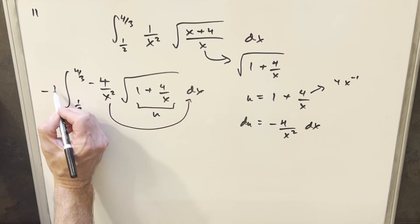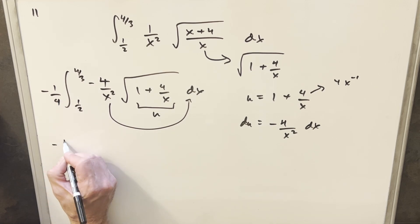But I don't want to change it, so I'm just going to multiply by a minus 1 fourth out front. And now let's make this substitution.